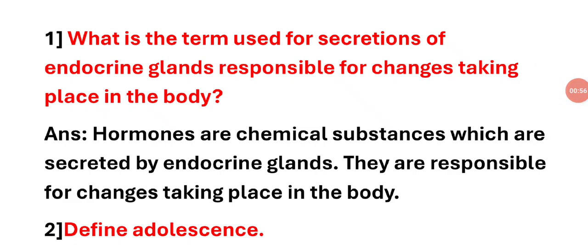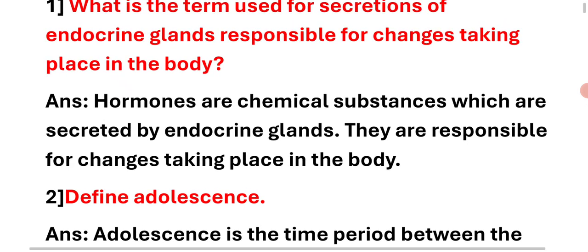First question: What is the term used for secretion of endocrine glands responsible for changes taking place in the body? Right answer: Hormones are chemical substances which are secreted by endocrine glands. They are responsible for changes taking place in the body.